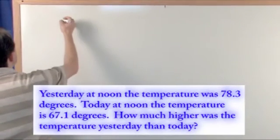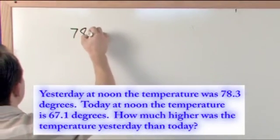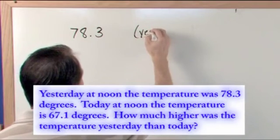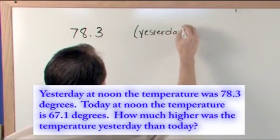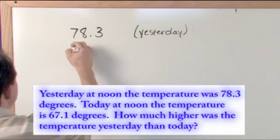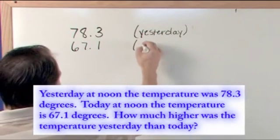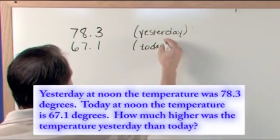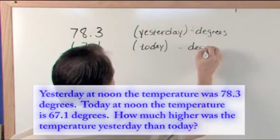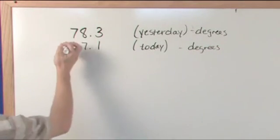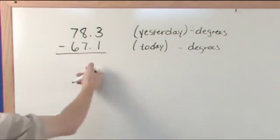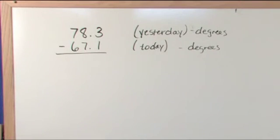So writing that down, it was 78.3 degrees yesterday, and I'm just going to write that down as a note to myself because paper is cheap and it's good to go ahead and remind yourself what you're talking about. Today is 67.1 degrees, and these are both degrees. Now remember, I've always told you when you add or subtract numbers together you have to have the same units. So we have the same units. Degrees subtracted from degrees is going to give us degrees in the final answer.